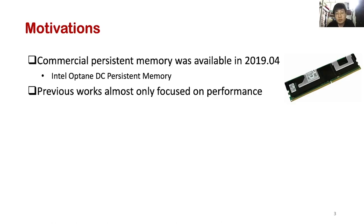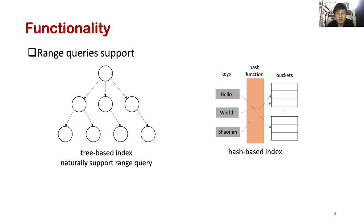Previous work almost focused on performance. Is performance enough? In this work, we consider three aspects, including functionality, performance, and correctness. Firstly, two features are required for functionality, including range query and variable-sized keys.